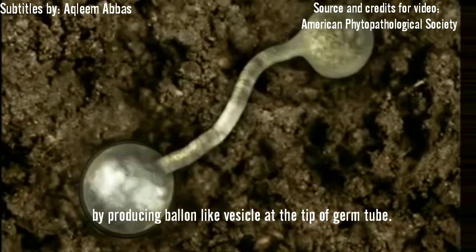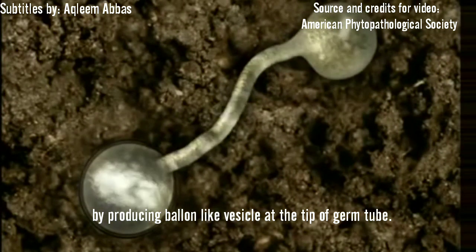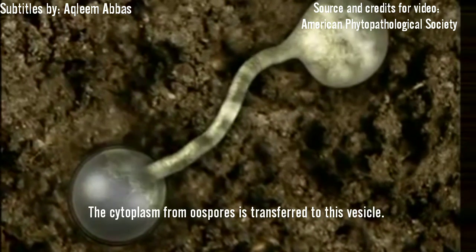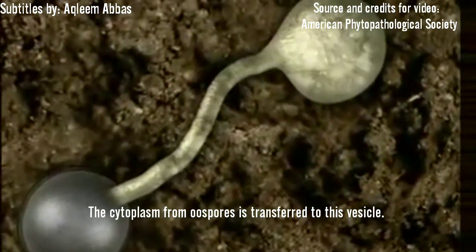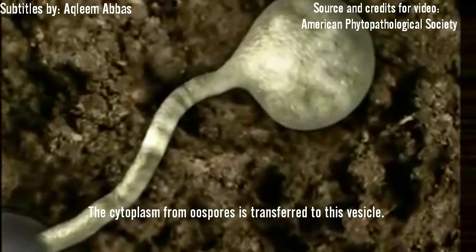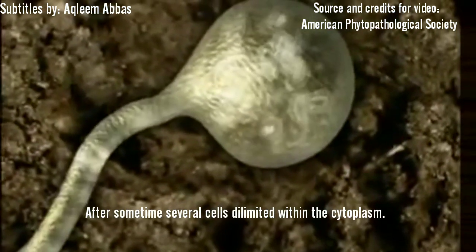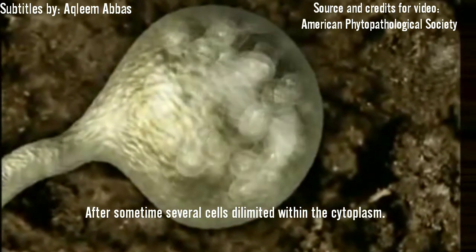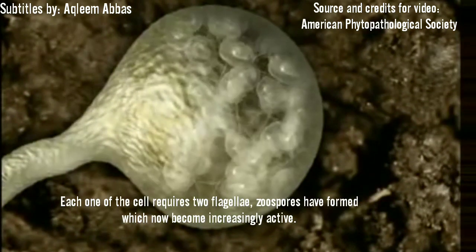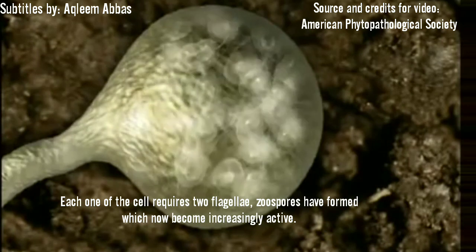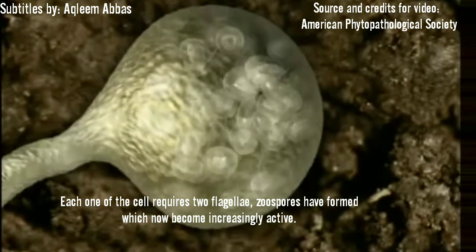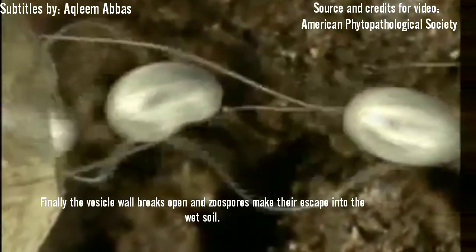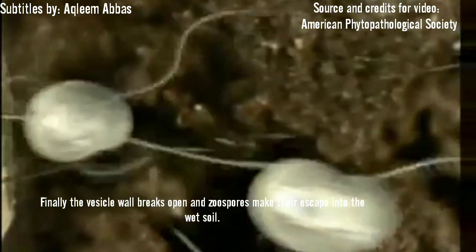The cytoplasm from the oospore is transferred to this vesicle. After some time, several cells are delimited within the cytoplasm. Each one of the cells acquires two flagella. Zoospores have formed, which now become increasingly active. Finally, the vesicle wall breaks open, and the zoospores make their escape into the wet soil.